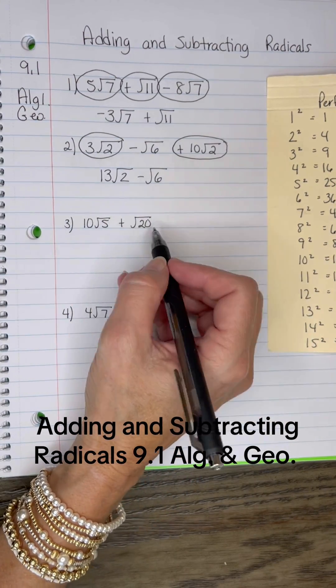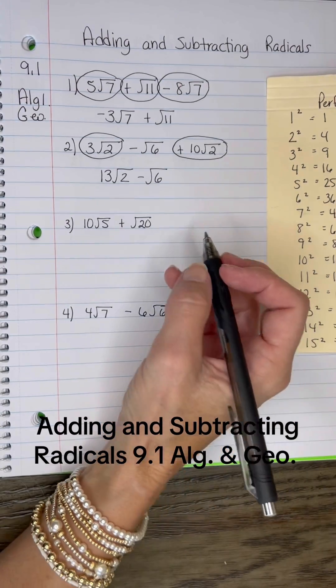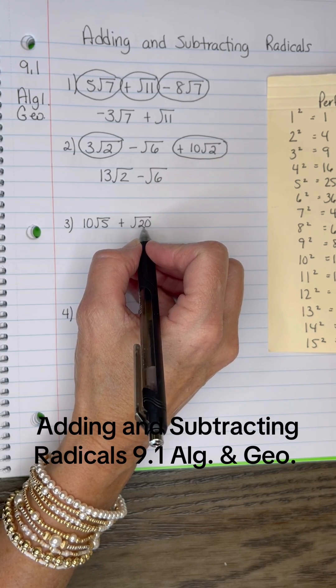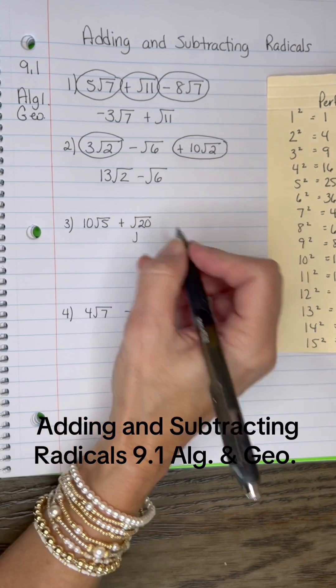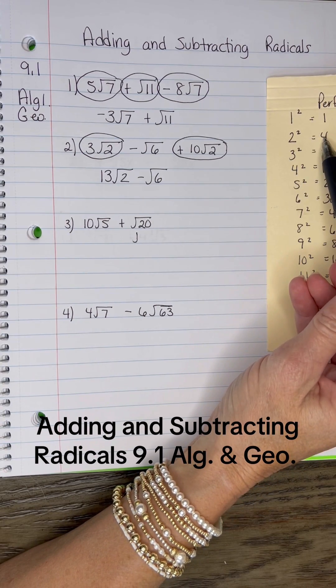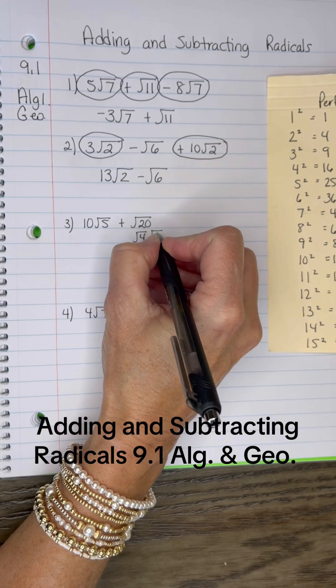And then here, I do not have like radicands, but in most cases I can get like radicands because that √20 needs to be broken down the way we did earlier. I know that the perfect square that will go into 20 is 4. 4 will go into 20. That's one of the factors: 4 times 5.